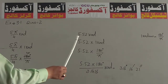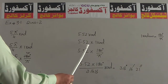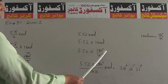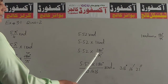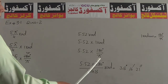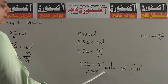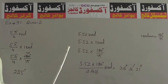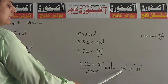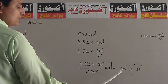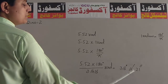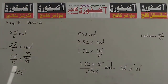अब दूसरा value लिया गया: 5.52 Radian. 5.52 × 1 Radian = 5.52 × 180 degree / Pi. Pi की मतली 3.1416 लेंगे. जब हम इस सारे को हल करेंगे, तो answer आएगा — degree, minute, second वाला button press करेंगे — 316 degree, 16 minute, 21 seconds. यह हमने Radian को degree में तब्दील कर दिया है.